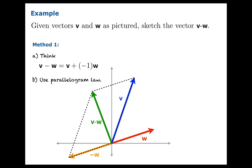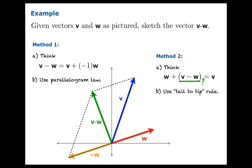There's actually another way to do it. Think about the equation: w plus the quantity v minus w should give you v, because the w and minus w cancel giving the zero vector, and zero vector added to v gives v. So we're looking for v minus w using the tail-to-tip rule: the red vector w plus some green vector should give you the blue vector v. The tail-to-tip rule says if you draw a vector from the tip of w to the tip of v, then the red plus the green gives you the blue — that green vector is the v minus w we're looking for. Both methods give you the same vector.